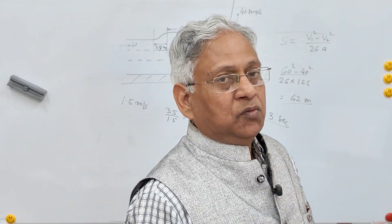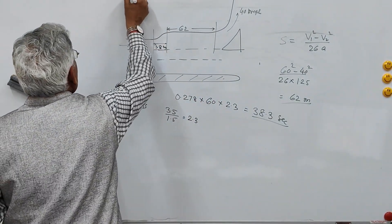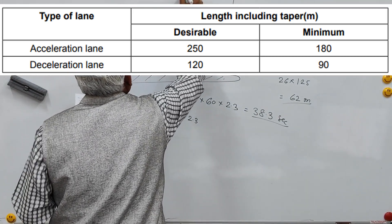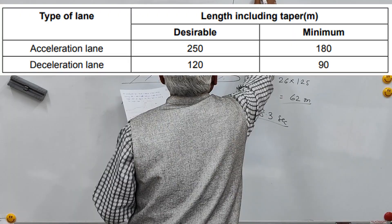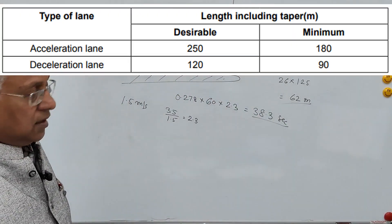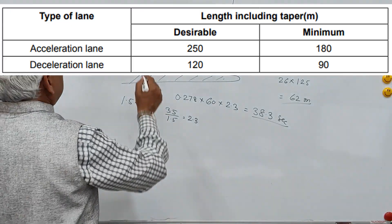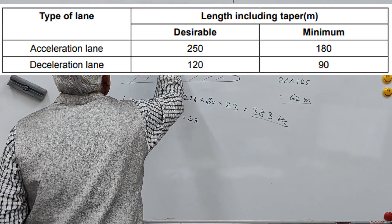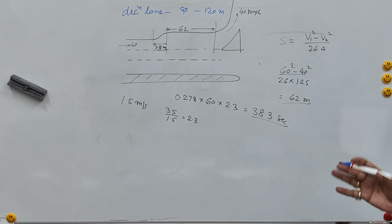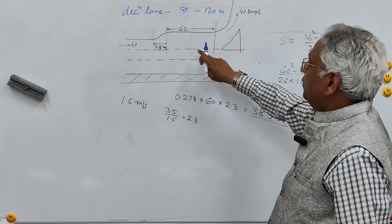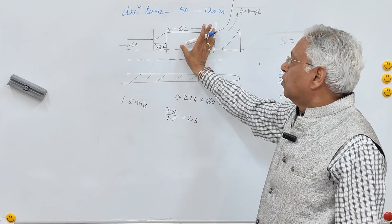IRC 92, which deals with expressways in rural areas, suggests that the length of the acceleration lane should be 180 meters to 250 meters — 180 meters is the minimum and 250 meters is the desirable length. For the deceleration lane, it says it should be 90 to 120 meters at intersections in rural or urban areas. The required length will depend upon the exit speed — if exit speed is very low, more length is required to decelerate.